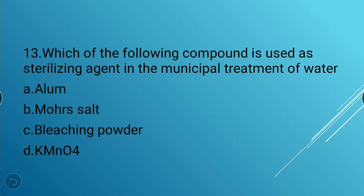Next question: Which compound is used as a sterilizing agent in the municipal treatment of water? Options: alum, common salt, bleaching powder, potassium permanganate. The answer is bleaching powder — bleaching powder is used as a sterilizing agent in municipal water treatment.